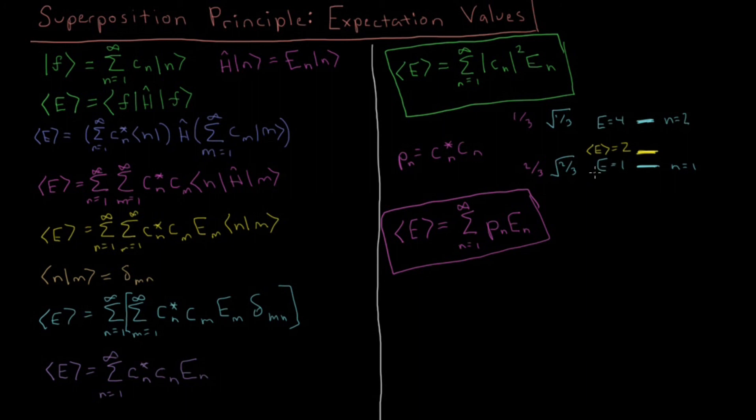Now when we talked about measurements, if you make a measurement, you're only going to get either 1 or 4, you can't get 2. 2 is just the average of a large number of measurements. If you measure it, you're either going to get 1 or 4, and there's a 2 thirds probability you get 1, and a 1 third probability you get 4.